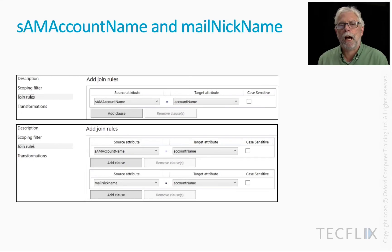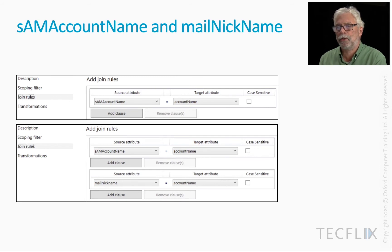On this slide, I'm just showing you what those two join rules might look like that we chose. SAM account name to account name is the default, but if Exchange is detected, you get SAM account name to account name and also mail nickname to account name. It'll go through those two clauses one after the other — if the first one fails, it'll go to the next one.